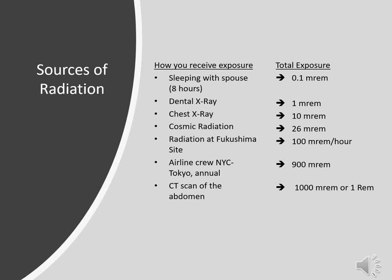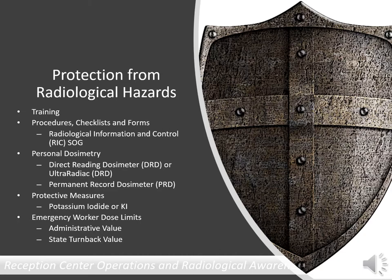Typical sources of radiation are found in nature and man-made. Annual or just-in-time training are key components of protection. Guidance documents are available for use and may include standard operating guidelines, positional checklists, forms and documents for data collection and tracking, and facility layouts.